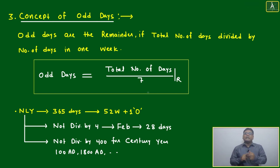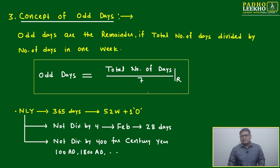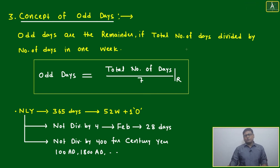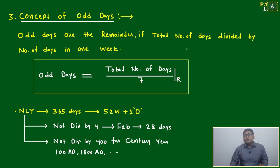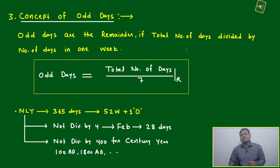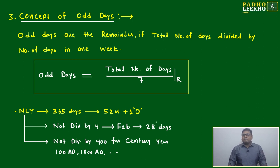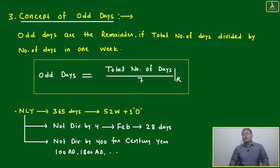We know that January 1st, 1 AD was a Monday. From there we have to calculate forward. After seven days, Monday comes again; after another seven days, Monday again. But if you do this manually and consecutively it may take much, much time.